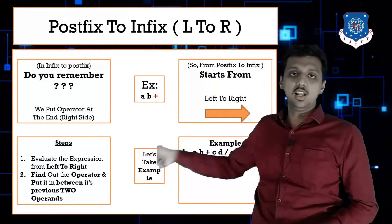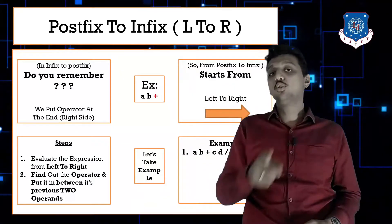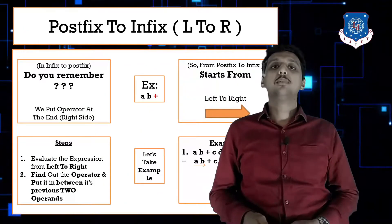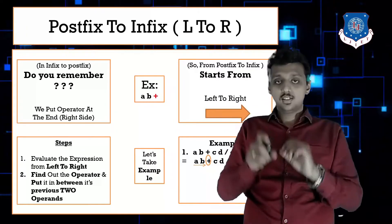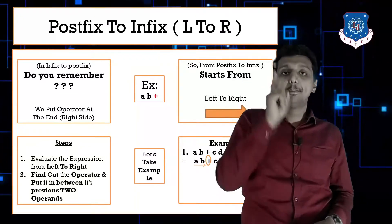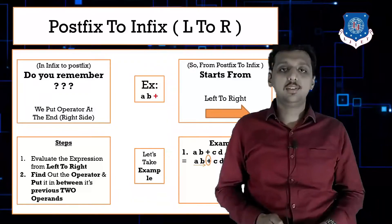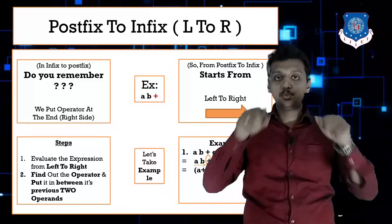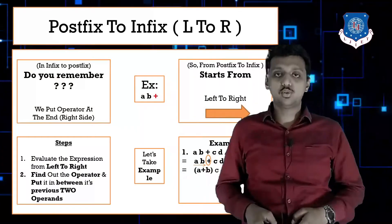Go from left to right and check which operator comes first. I found '+' — so take the plus and put it between 'a' and 'b', its previous two operands. Put plus between a and b, so we get (a+b). After evaluating this term, add brackets around it.